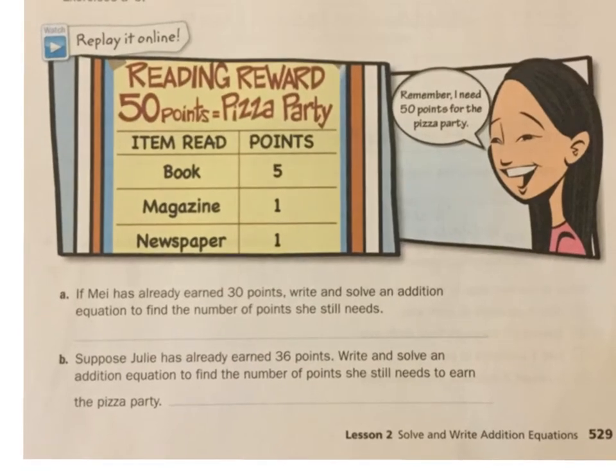So the graphic novel says reading reward, 50 points equals a pizza party. And if you do all this, you can add them all up, and hopefully you want to get these 50 points, because who wouldn't want a pizza party?